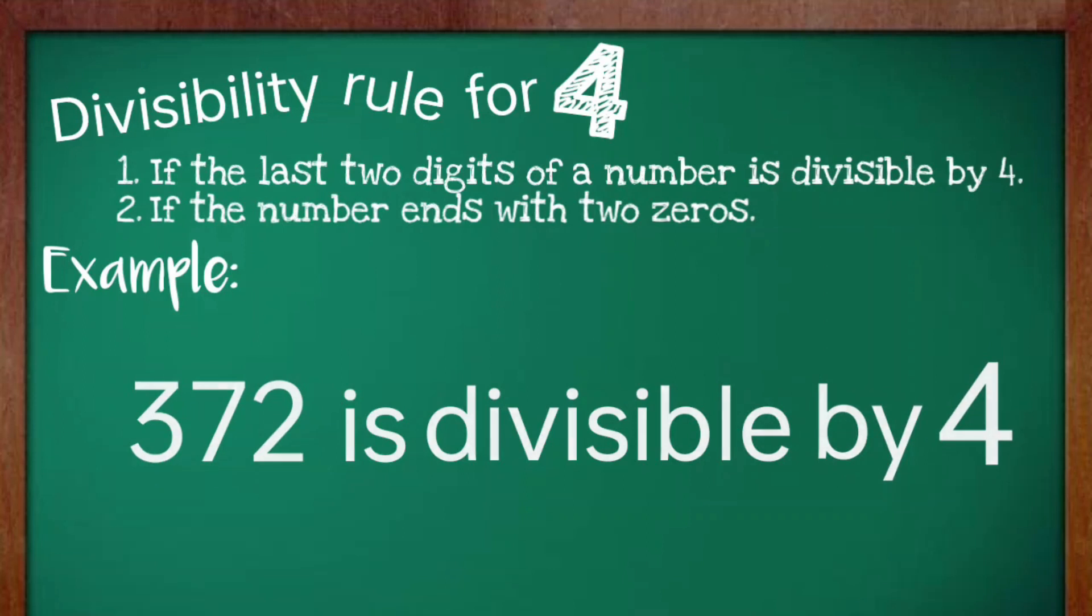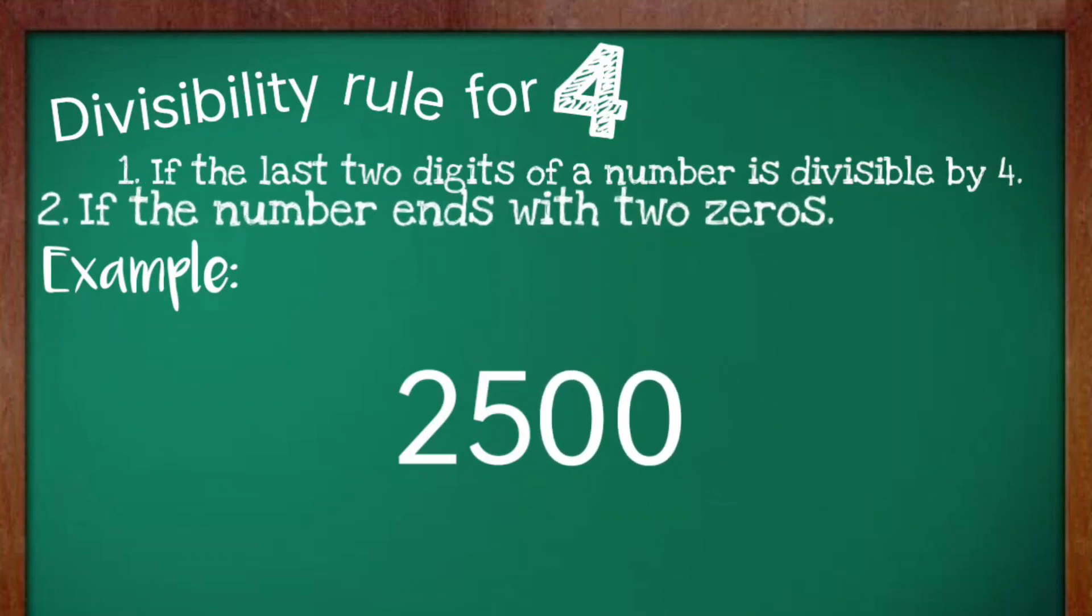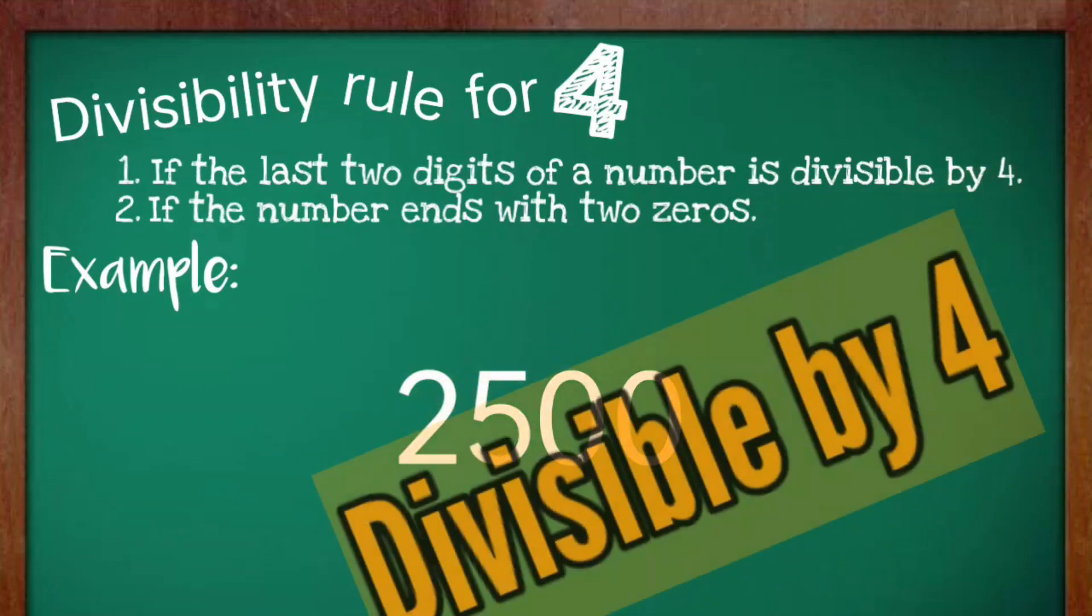Now, let's have another example. Let's try 2,500. Since the number ends with two zeros, the second rule takes place, hence making it divisible by 4.